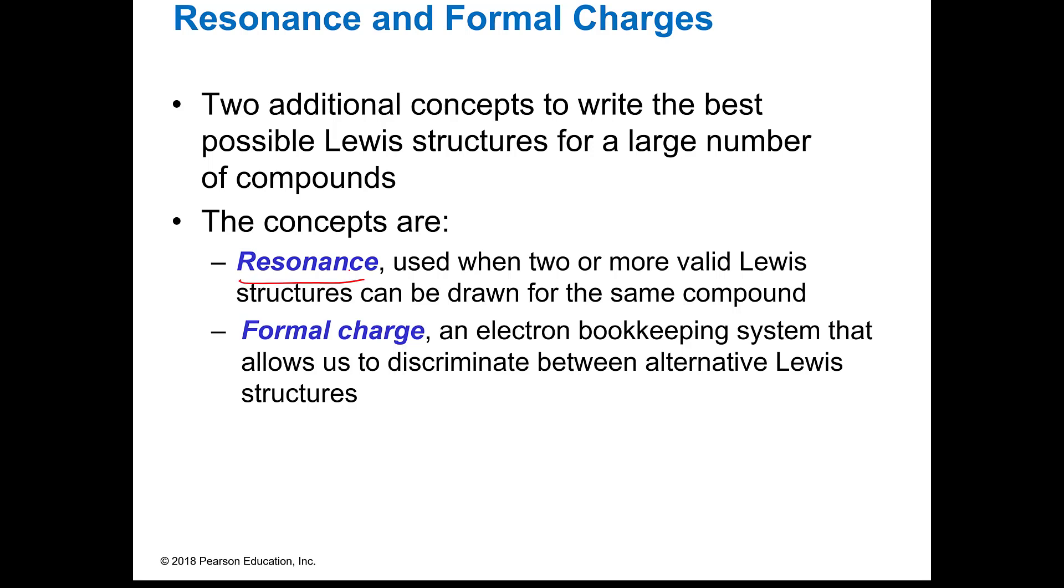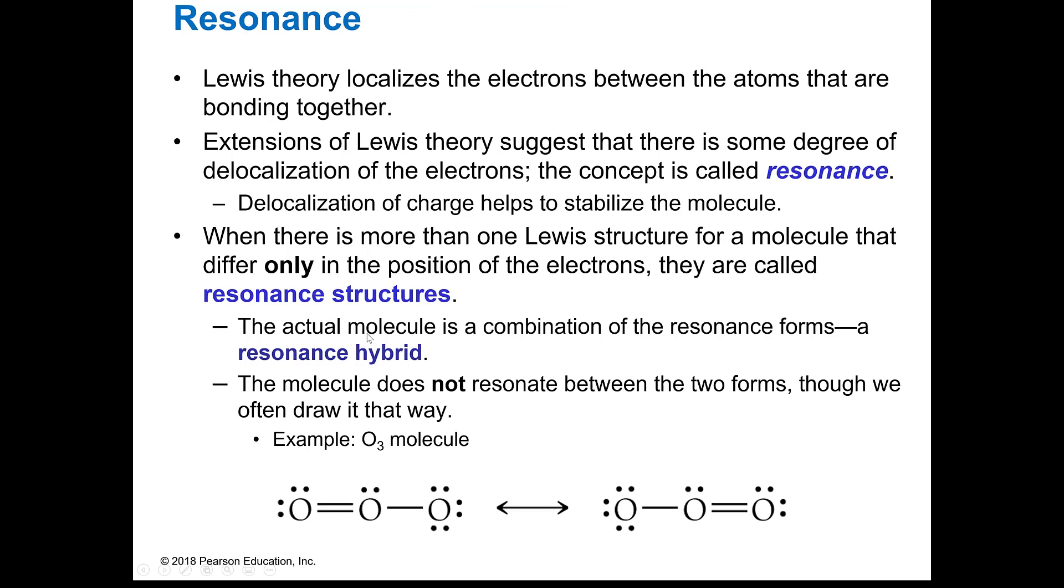Formal charge is a system of numbers where we can assign particular numbers to each individual element in a compound, and by looking at how those numbers come out in the accounting, we can tell which of those structures would actually be the best Lewis structure.